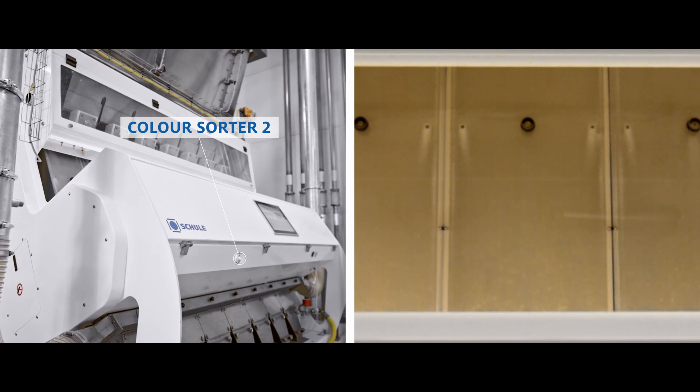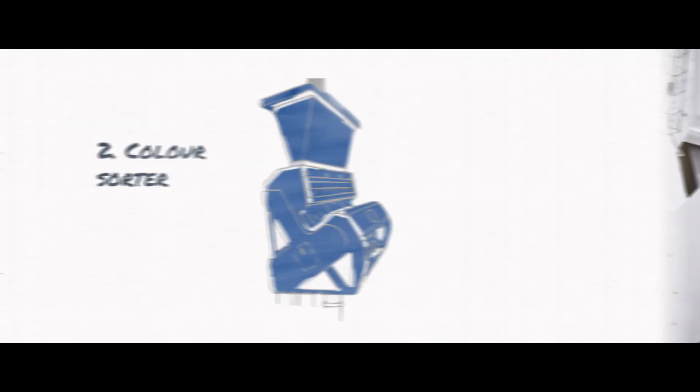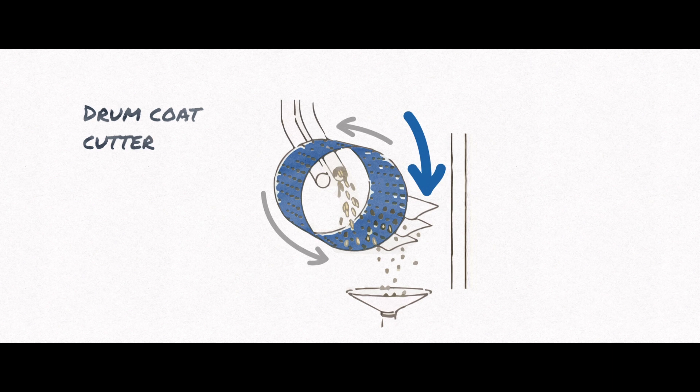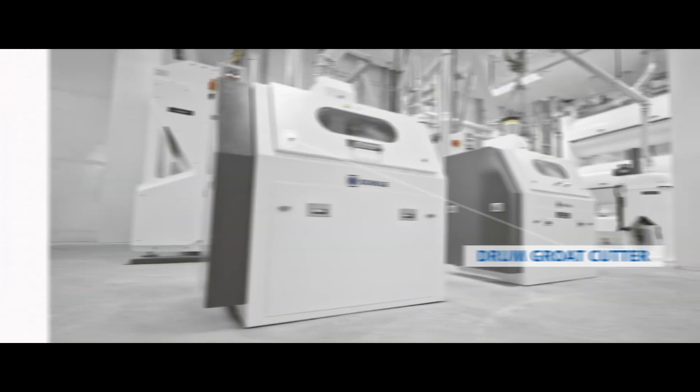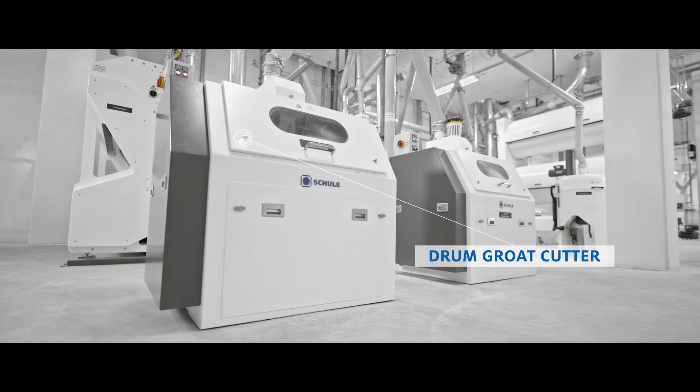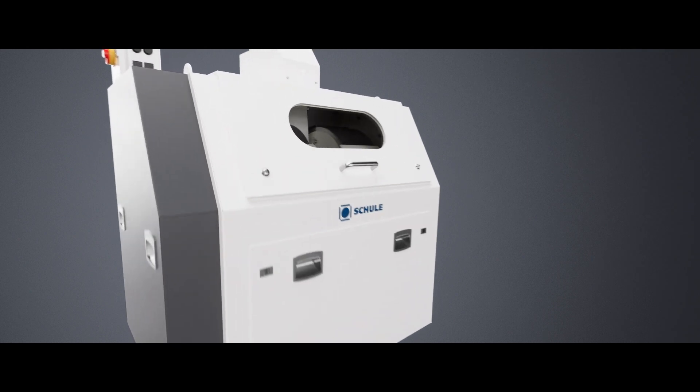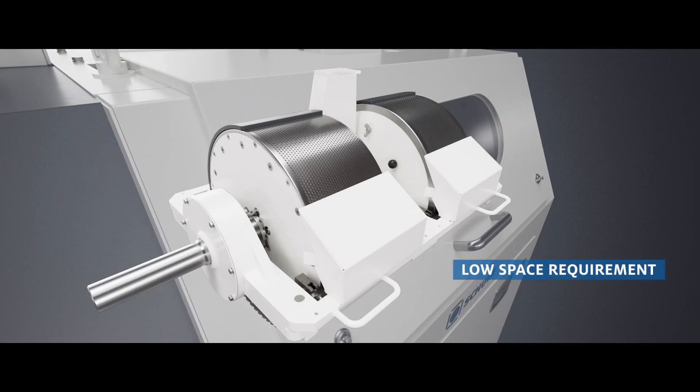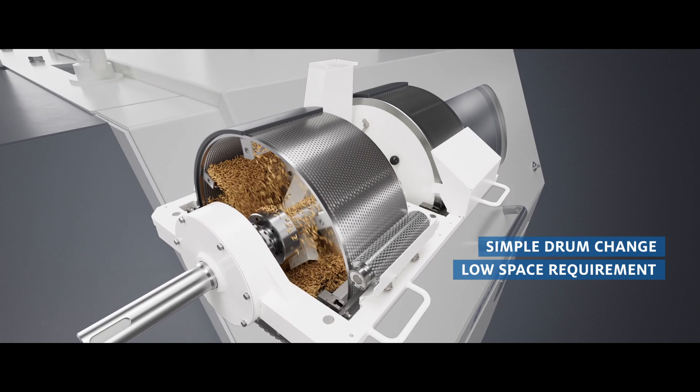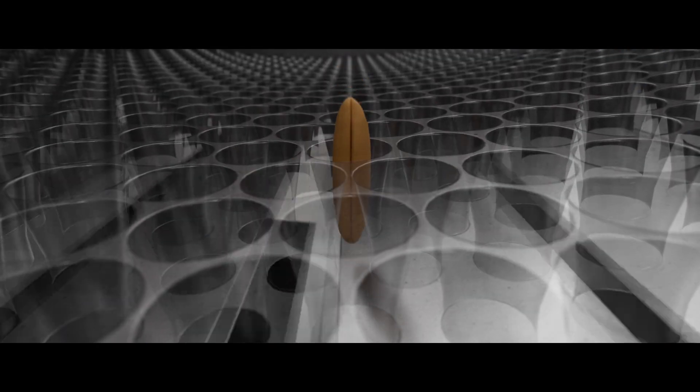In the next step, the hulled and cleaned oat kernels are conveyed to the drum groat cutter. In the process, the grains fall through calibrated openings of a perforated drum. The lower half of the rotating drums is surrounded by a precision knife basket without shims, cutting the grains into particles of just a few millimeters in size.